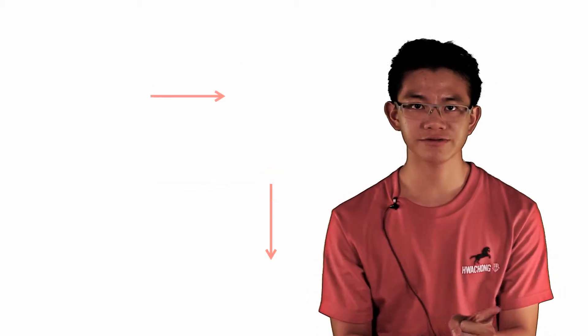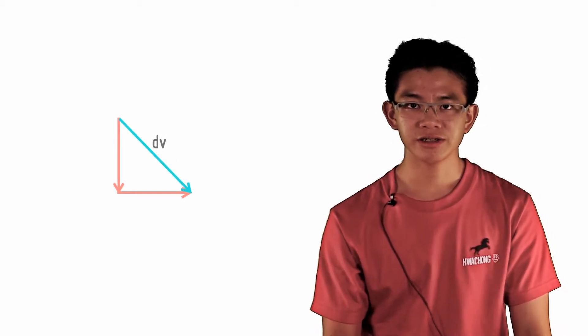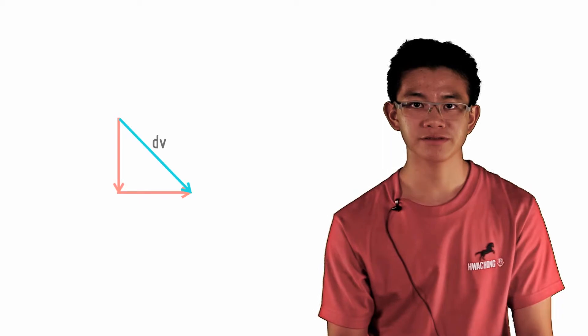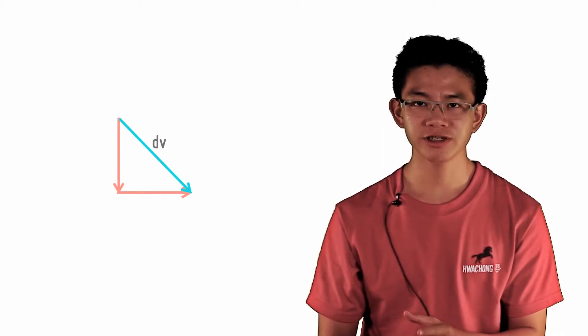If you notice, when we place the tails of the two vectors together, there is a change in velocity. This is represented by the vector that connects the two velocity vectors. We denote this change as delta v, which is also a vector.